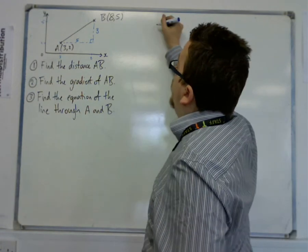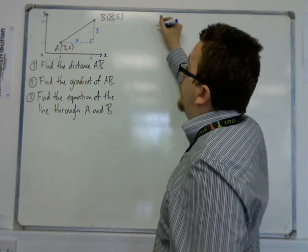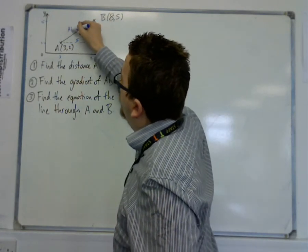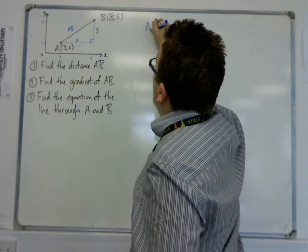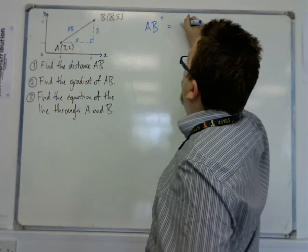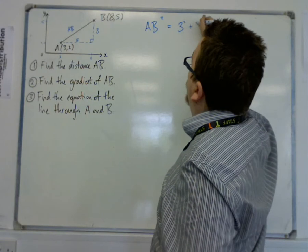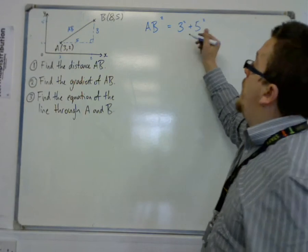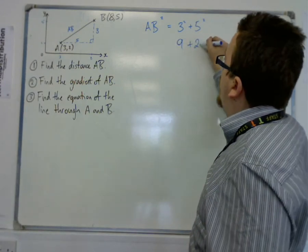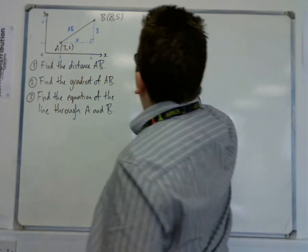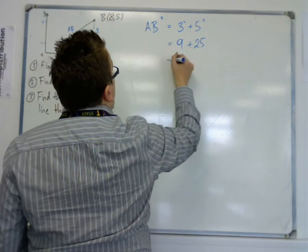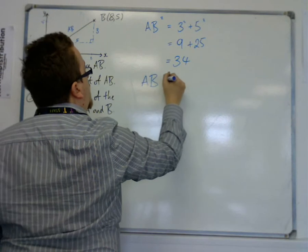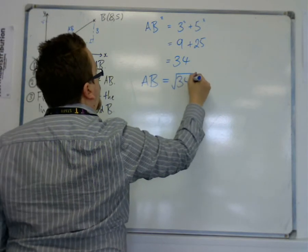So the length of the opposite side, using Pythagoras' theorem, let's actually just write that as AB. So AB squared is equal to 3 squared plus 5 squared. Using Pythagoras, 3 squared is 9, 5 squared is 25. So 9 and 25 is 34. So the length of AB is equal to the square root of 34.